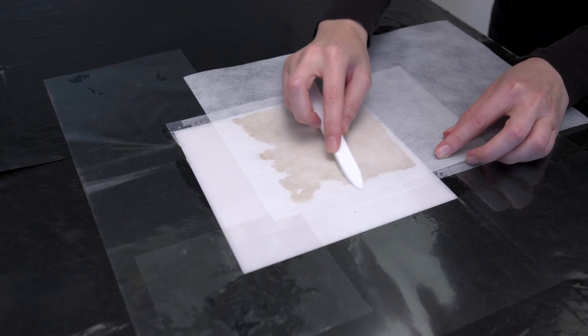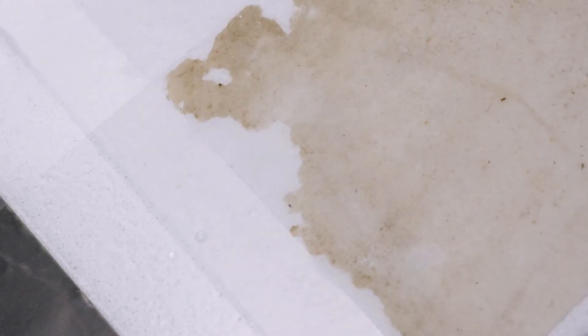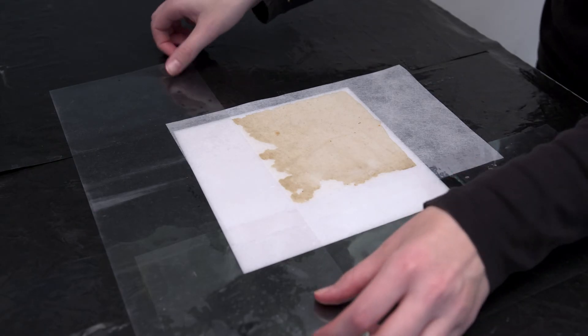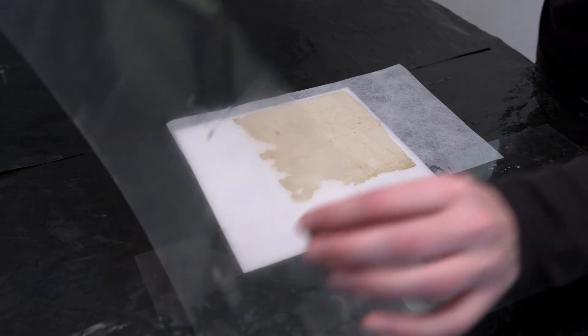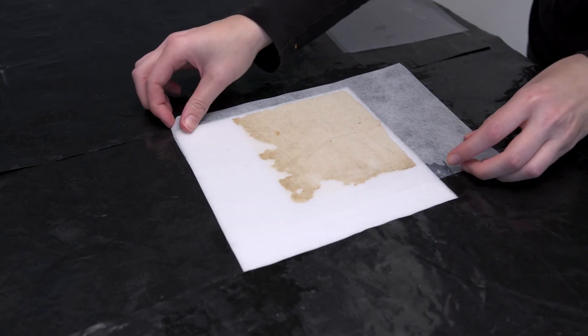A polyester fleece can be placed on top and rubbed with a bone folder to press the fibers into place. Once most of the moisture has been aspirated, the object is removed from the vacuum table along with the polyester fleece.